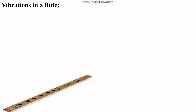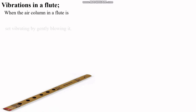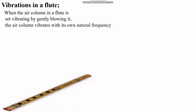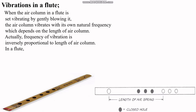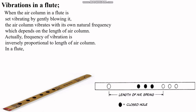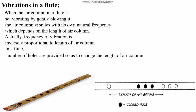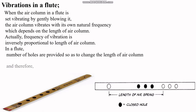Vibrations in a flute: in a flute, there are holes and air is blown to produce sound. When the air column in the flute is set vibrating by gently blowing it, the air column vibrates with its own natural frequency, which depends on the length of the air column. The frequency of vibration is inversely proportional to the length of the air column. Holes are provided to change the length of the air column and therefore change the frequency of sound produced.